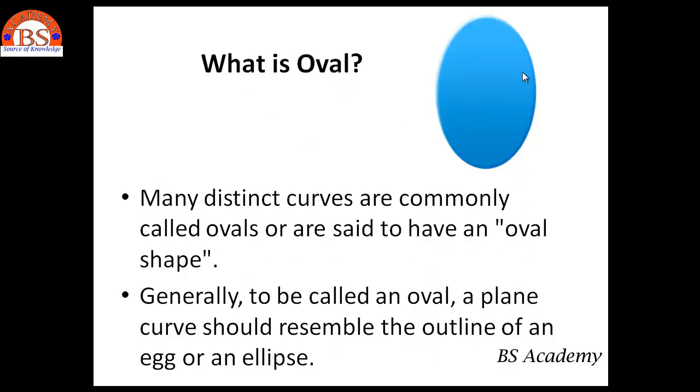And the next comes of oval. What is oval? Many distinct curves are commonly called ovals or said to have an oval shape. Generally, to be called an oval, a plane curve should resemble the outline of an egg or an ellipse.